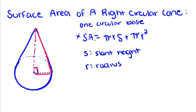To find the surface area of a right circular cone, we have to take the area of the bottom plus the area of the sides. The area of the bottom is the area of a normal circle, so pi r squared. The area of the cone part is pi r s, where s is the slant height of the cone — not the perpendicular height, but the slant height. And r is the radius. So that's how we find the area of the cone-shaped part.